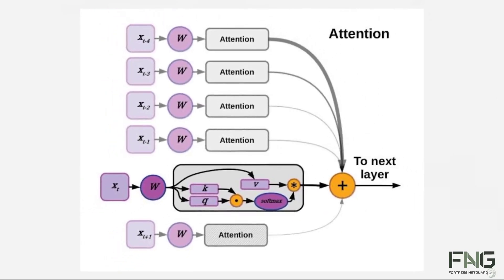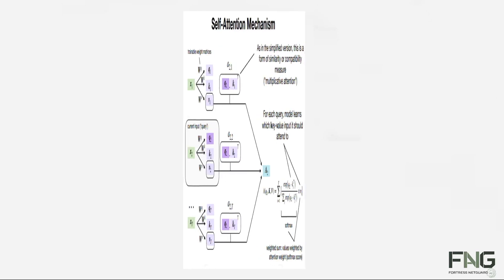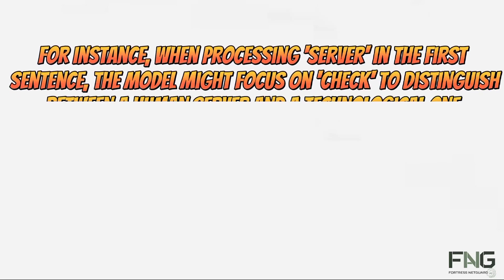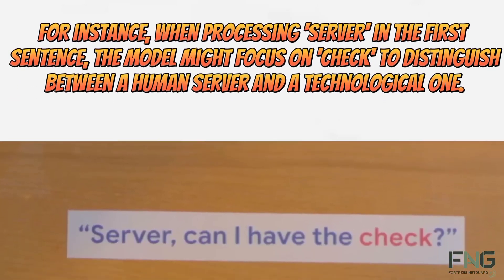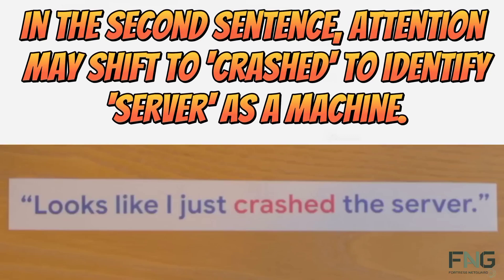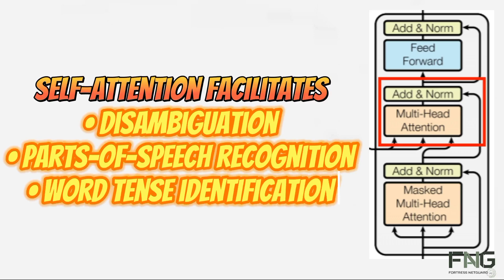Consider these two sentences: 'Server, can I have the check?' versus 'Looks like I just crashed the server.' The word 'server' holds different meanings in each context, discernible through the surrounding words. Self-attention empowers neural networks to understand words in the context of their surroundings, aiding in disambiguation. For instance, when processing 'server' in the first sentence, the model might focus on 'check' to distinguish between a human server and a technological one. In the second sentence, attention may shift to 'crashed' to identify server as a machine. Self-attention facilitates disambiguation, parts of speech recognition, and even word tense identification.